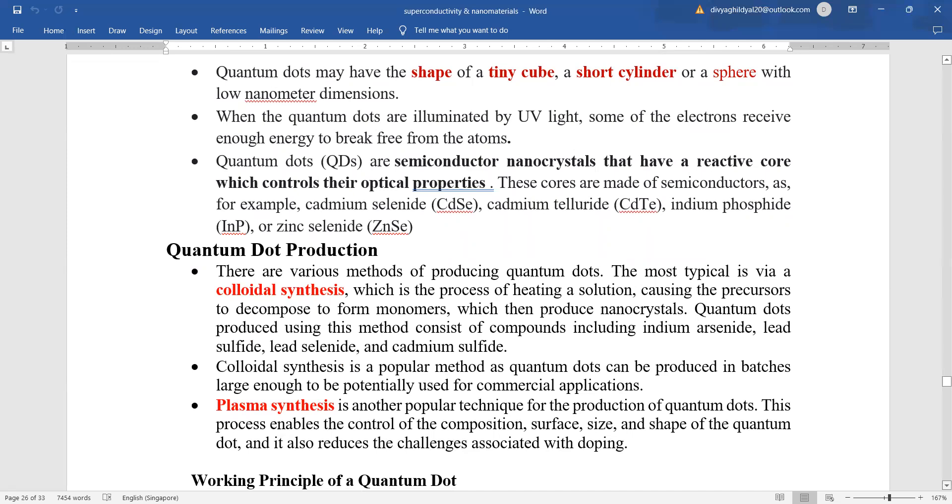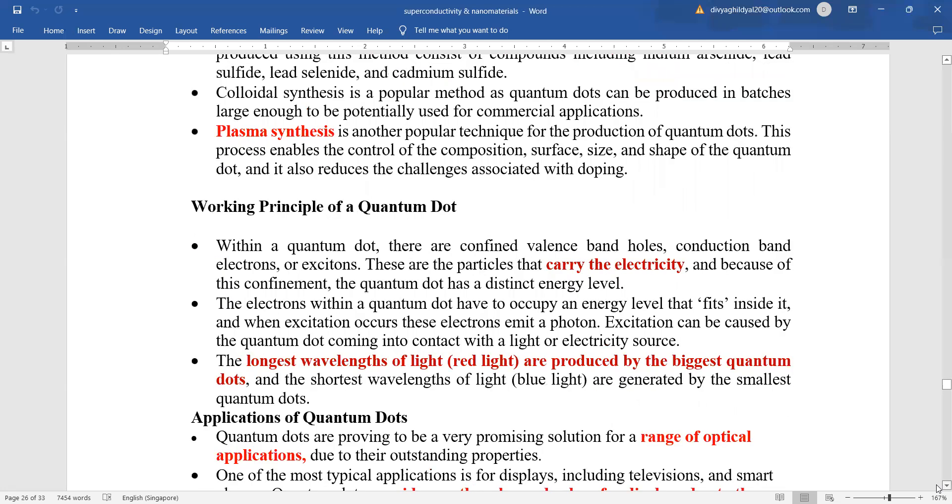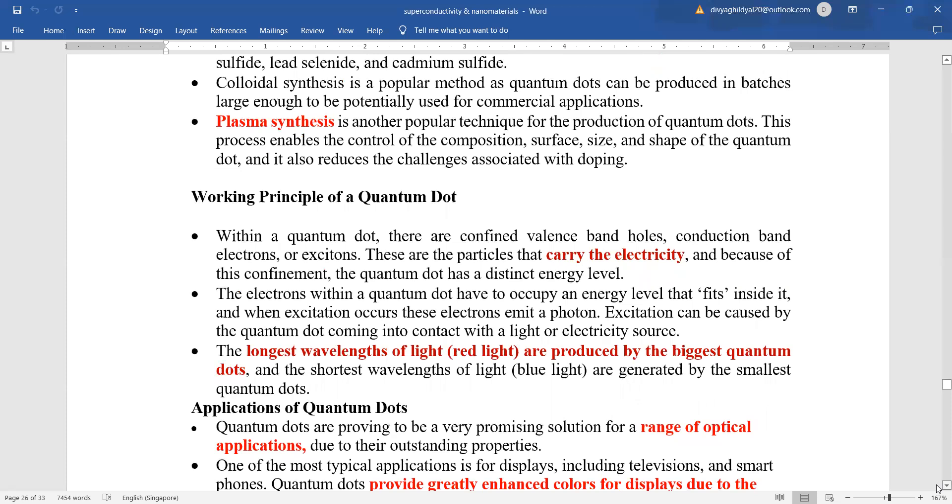Hence, their production is most typical method of colloidal synthesis, which is the process of heating a solution causing the precursors to decompose to form monomers which then produce nanocrystals. Quantum dots produced by colloidal synthesis include indium arsenide, lead sulfide, and cadmium selenide. Colloidal synthesis is a popular method. Plasma synthesis is also a very popular technique. All these details are not there in your syllabus. Only you need to have a brief idea about quantum dots.